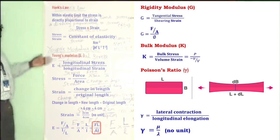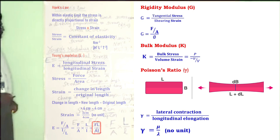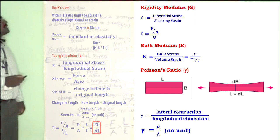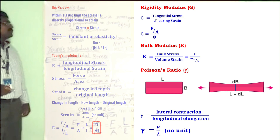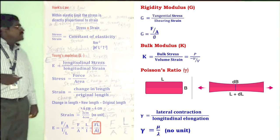So far we have studied three moduli. Young's modulus relates to length, rigidity modulus relates to angle, and bulk modulus relates to volume. All the moduli have the unit Newton per meter square.